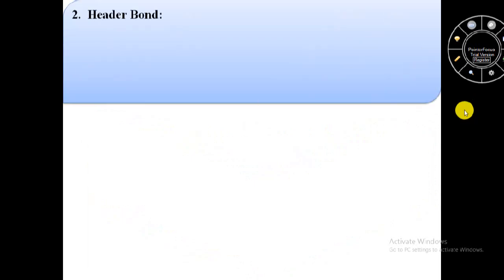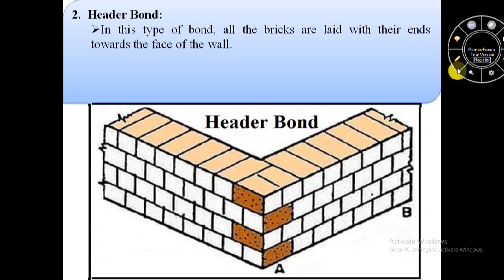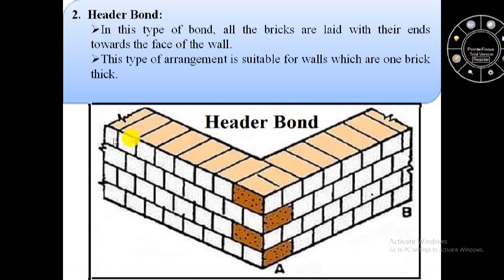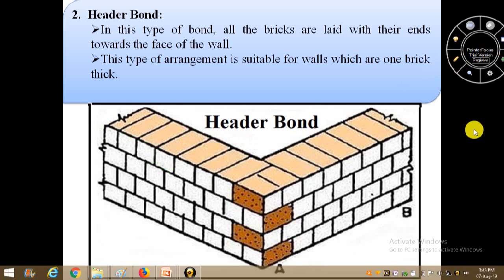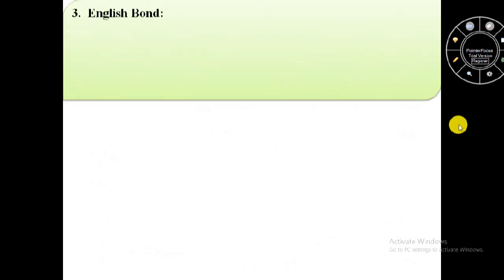Now we will see the second type of bond, that is header bond. In this type of bond all the bricks are laid with their ends towards the face of the wall. Here we can see this is the face of wall and these are the ends of bricks. This type of arrangement is suitable for walls which are one brick thick. Header bond is suitable for walls of lightly loaded load-bearing structures.